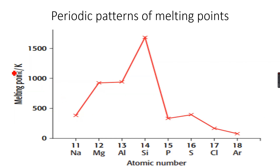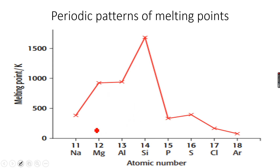Periodic patterns of melting points: as we move across a period, melting points first increase from sodium to silicon, and from silicon to argon they decrease. From sodium to aluminium, the charge on the ions increases and the radius of the ions decreases, because they have metallic bonding — metal ions surrounded by a sea of delocalized electrons. As a result, the strength of the metallic bonds increases, so more energy is needed to break the bonds and melting point increases.